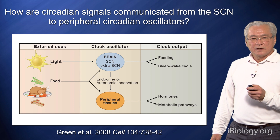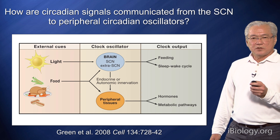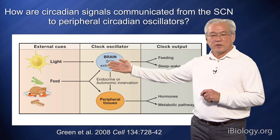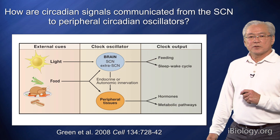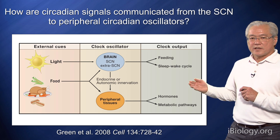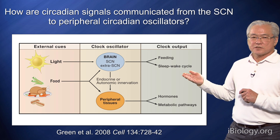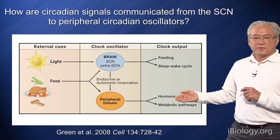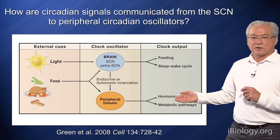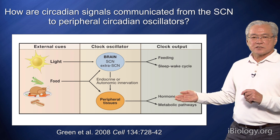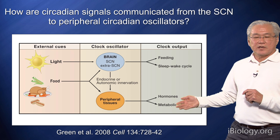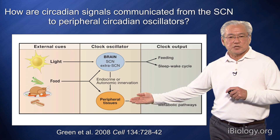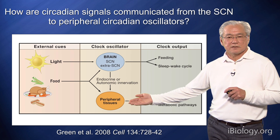So how is it that the SCN really communicates this information? We know that light is one of the major inputs to the brain and the SCN, which then controls many behaviors such as feeding and sleep-wake cycles. But recent work has also shown a very important role for nutritional cycles and signals, as well as feeding behavior, particularly for regulating peripheral tissues such as the liver.